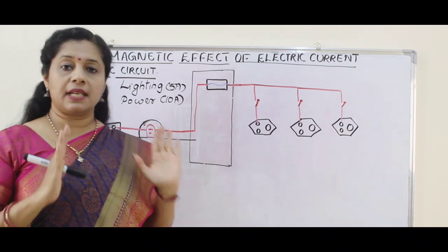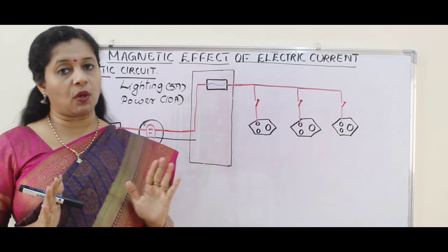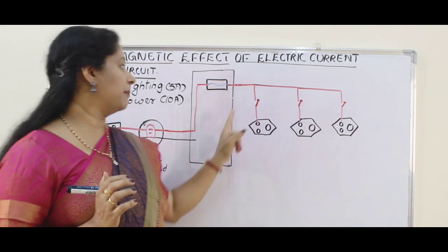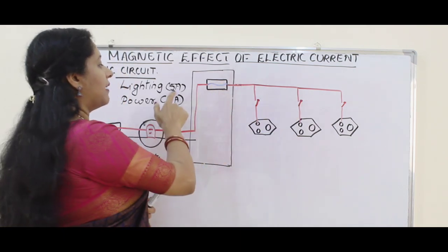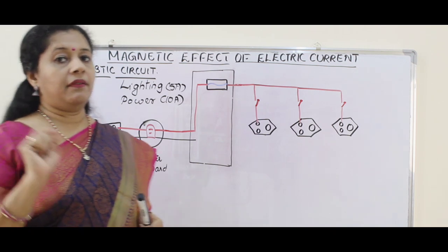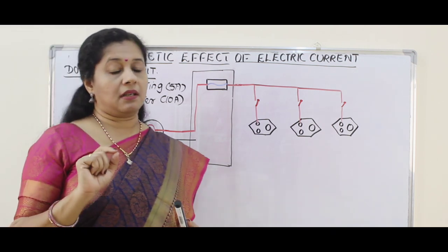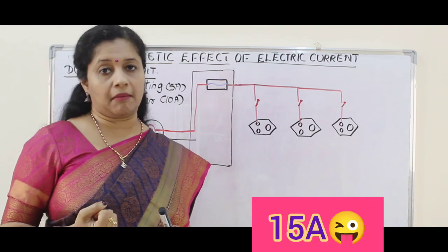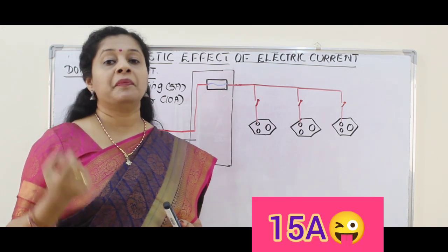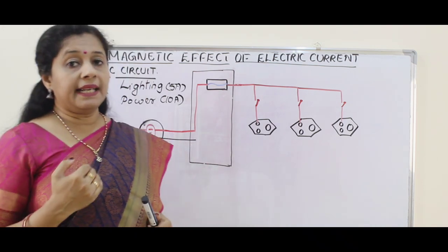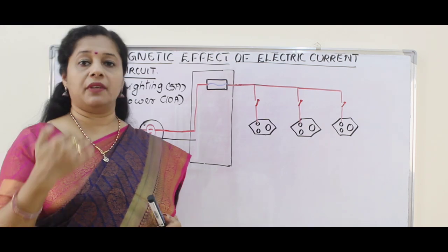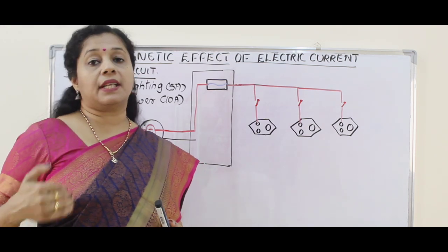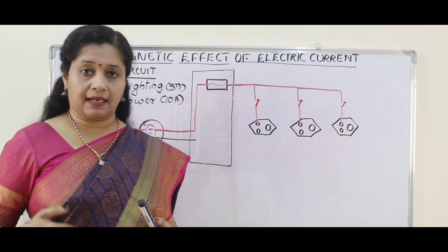The lighting circuit carries small current, so there is a fuse wire rated 5 amperes only to protect all the appliances. Whereas for a power circuit, a higher rating fuse of 10 amperes is used. Now, however many circuits we have — lighting or power — all these circuits are connected in parallel connection.